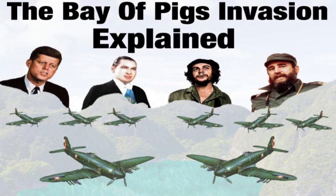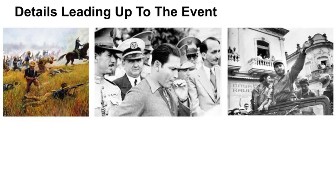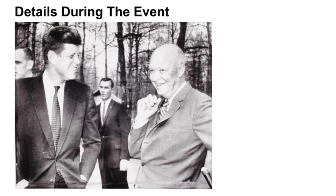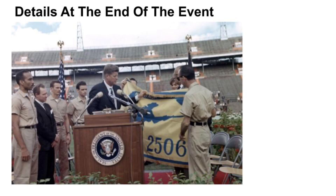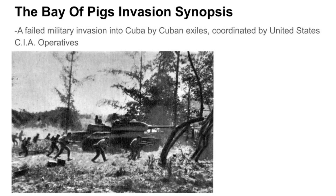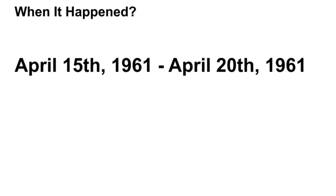Hey everyone, Will here. For today's video, we are going to be analyzing the Bay of Pigs invasion that took place right before the Cuban Missile Crisis. We're going to be going over all aspects of this event, including the details leading up to it, during it, and at the end of it. The Bay of Pigs invasion was a failed military invasion into Cuba by Cuban exiles, coordinated by United States CIA operatives, and took place between April 15th and April 20th, 1961.